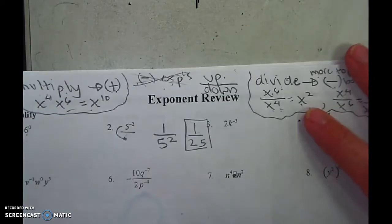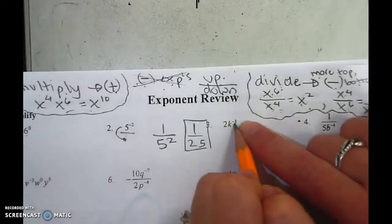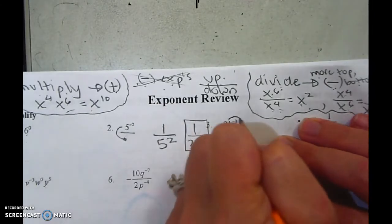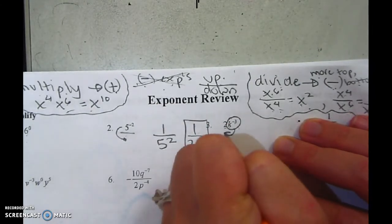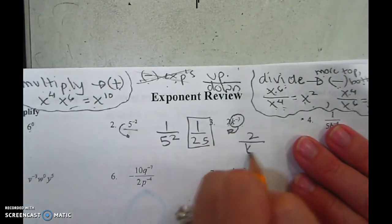Let's go to the next one. My issue again, you can't have a negative exponent. But the problem is that the negative is only touching the k, it's not touching the 2. So only this goes downstairs and the 2 is fine where it is. So it's 2 over k cubed.